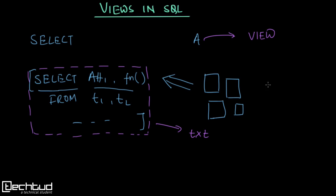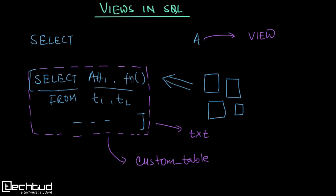A view is very similar to a variable in programming languages — within the scope of a variable you can reuse its value and store something in it. What you can do with a view is store a query — for example, this select query — in a view. Let's say we call it a custom table. Whenever we need to write a query like this, we can simply refer to that view. This SQL will be stored in the database with the name of the custom table.